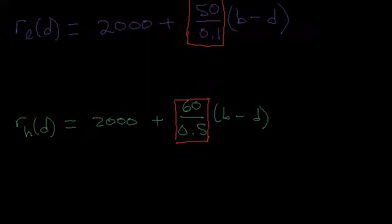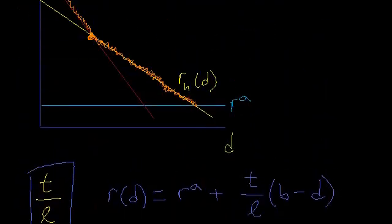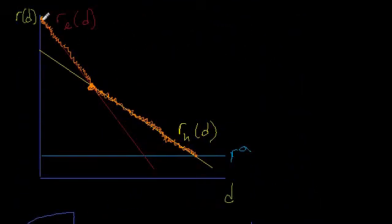So the low income households are going to have a steeper slope. And that's exactly what we predicted in our graph. The low income households have the steeper slope, and the high income households have the shallower slope.